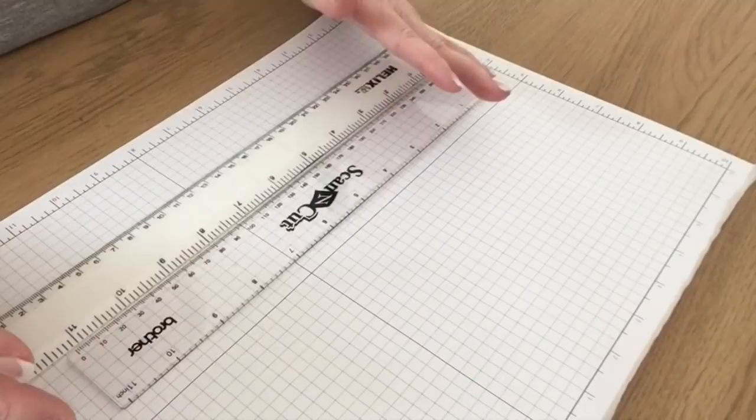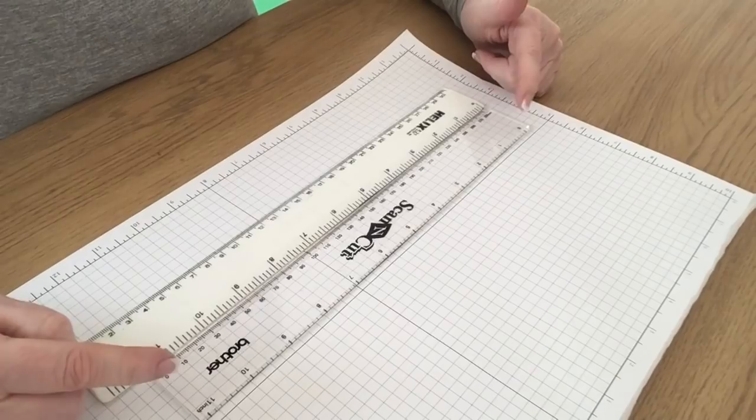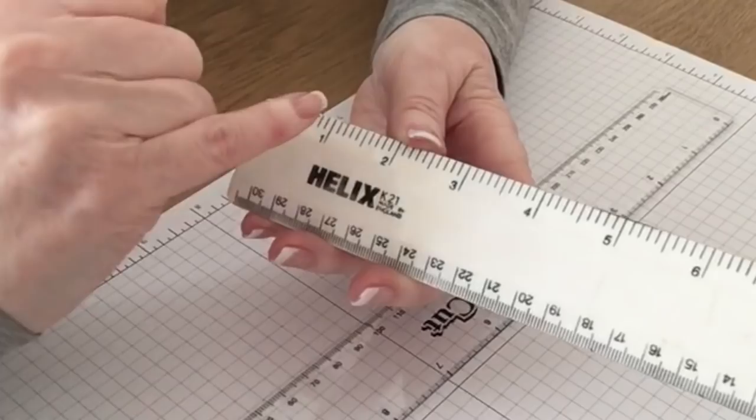Now on the face of it these two rulers here look the same apart from this one on the bottom goes to 12 inches and this one goes to 11 but there is a difference. If you look at this ruler and you look between an inch section it doesn't matter which they're all the same.